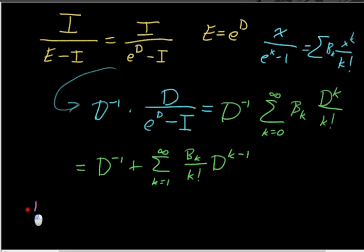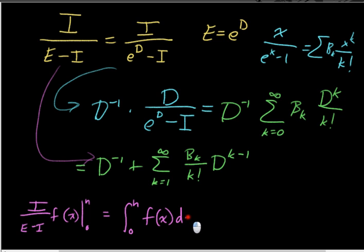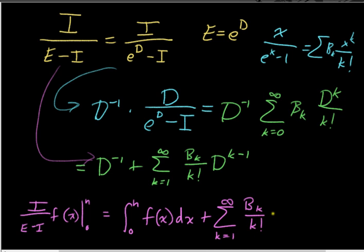So putting it all together: our original sum, which we had expressed as (I over (E minus I)) applied to f, evaluated from 0 to n, is now the inverse derivative — which is just an integral — giving the integral from 0 to n of f of x dx, plus the sum from k equals 1 to infinity of the Bernoulli number B_k over k factorial times the (k minus 1)-th derivative of f, evaluated from 0 to n.